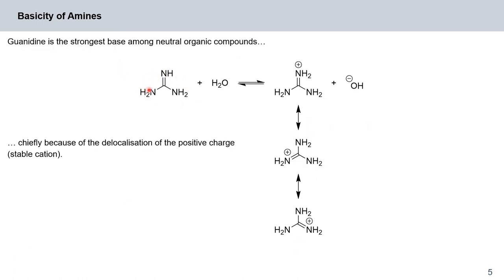As the last example, we have here guanidine, the strongest base among charged neutral organic compounds. Its basic character is chiefly because of the delocalization of a positive charge. As you protonate one of these amines here, you can very easily delocalize this positive charge around the molecule. It means you generate a very stable cation, and as a consequence, guanidine is a very good base.